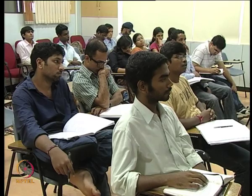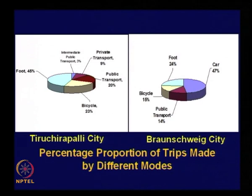Comparing with Braunschweig city: trips made by car account for 47 percent, foot 24 percent, bicycle 15 percent, and public transport 14 percent. An interesting point is that most European cities have a good public transport system with reasonable patronage — about 14 percent use public transport. However, the concern is that 47 percent of trips are made by car, which occupies almost entire road space and emits a lot of pollutants. That is their problem — contrast this with the scenario in Tiruchirapalli.